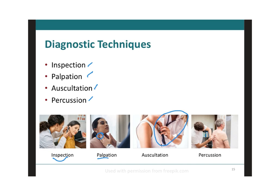Finally, percussion uses a tapping method — tapping certain body parts with your fingers, hands, or small instruments as part of a physical examination. This method is used to determine the size, consistency, and borders of a body organ, and can also detect the presence or absence of fluid in certain body areas.